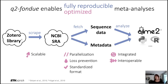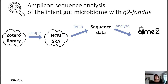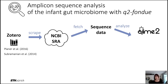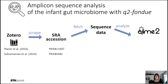As you can see, this whole process allows for a fully reproducible and optimized meta-analysis. To showcase this, let's have a look at an example use case of an amplicon sequence analysis of an infant's gut microbiome. If we were to conduct a meta-analysis, we would first need to choose the studies to include, then upload their publications into a Zotero web library. Then we could use the scrape functionality of Fondue to identify the accession IDs of the datasets of these studies.